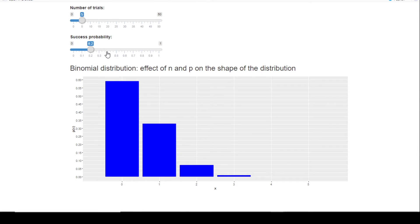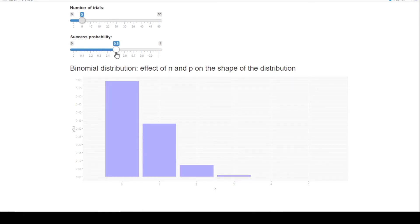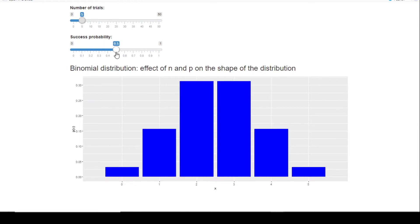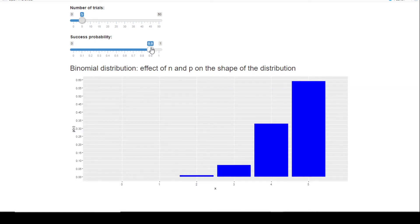If I move my p to 0.5, then my distribution is more or less symmetrical. And then if I move my p to 0.9, my distribution becomes negative skew.